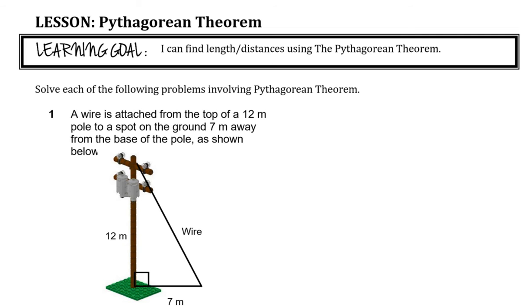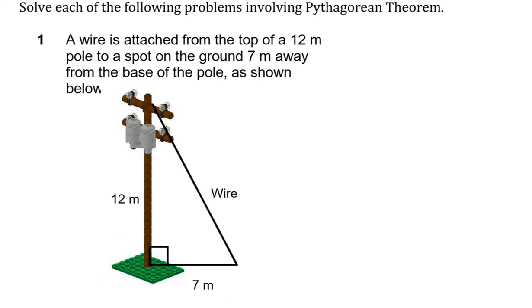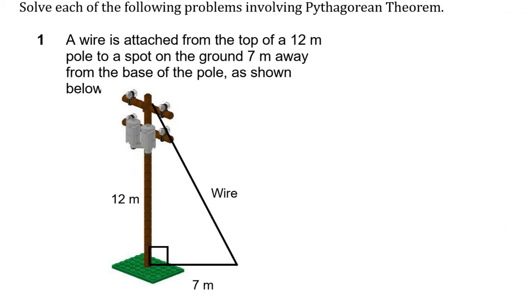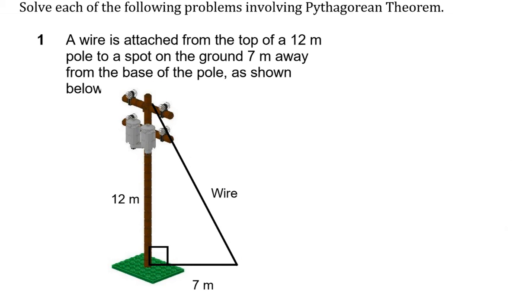Problem 1: A wire is attached from the top of a 12-meter pole to a spot on the ground seven meters away from the base of the pole, as shown below. Notice there's your right angle, so across from that is the longest side. You've seen a telephone pole or electricity pole that has some kind of wire attached — not usually at the very top, but that doesn't matter for this question.